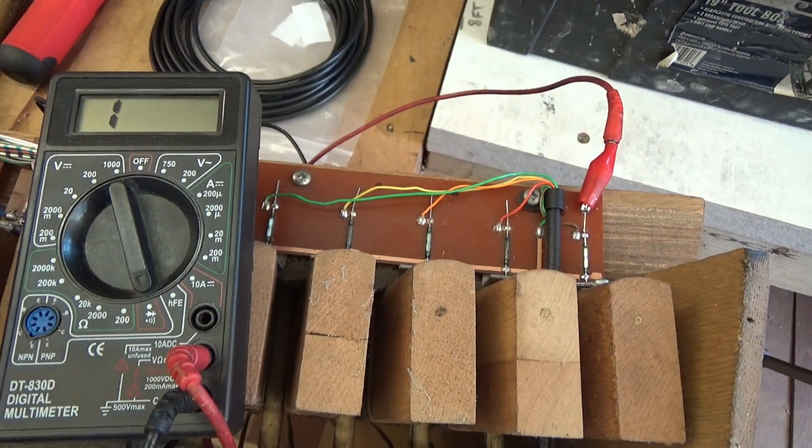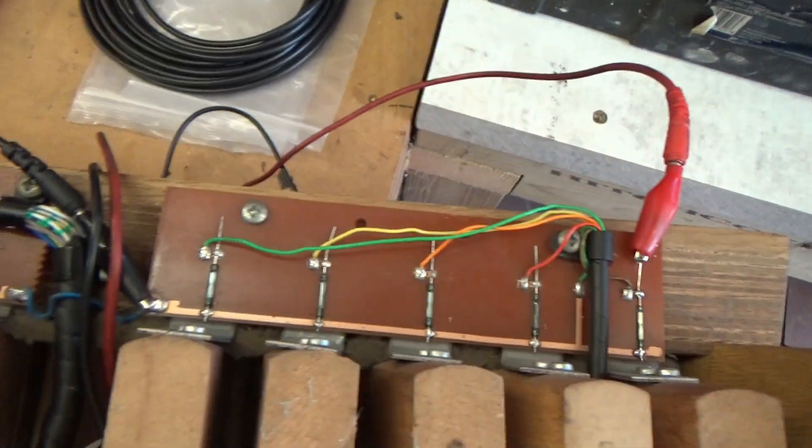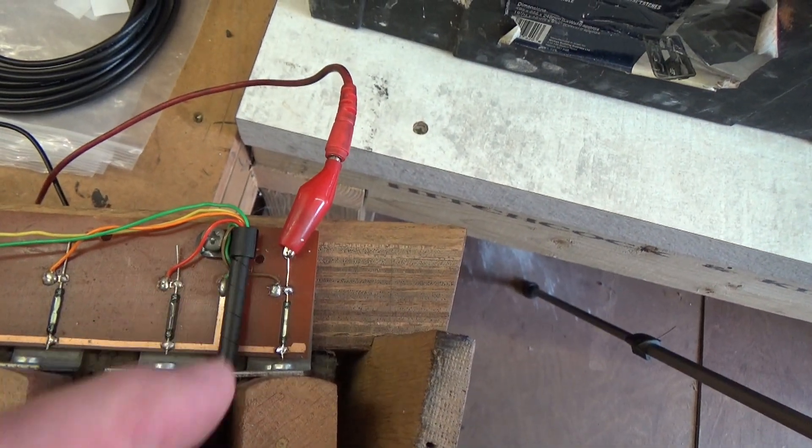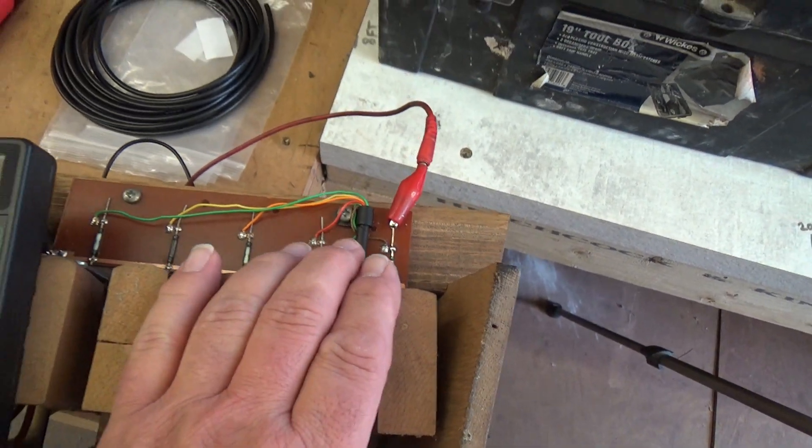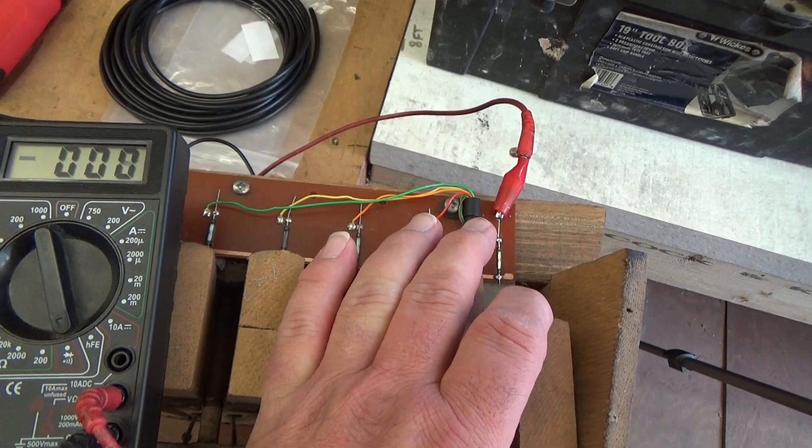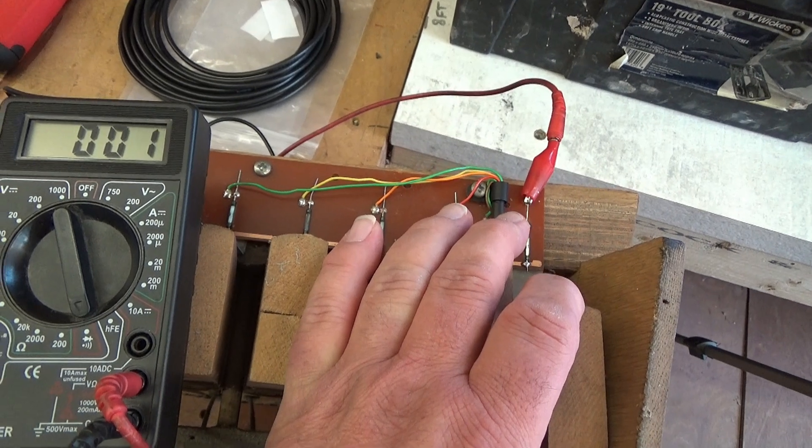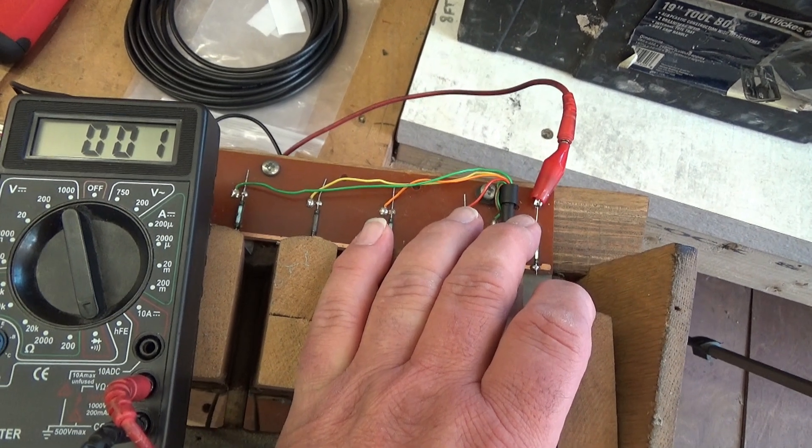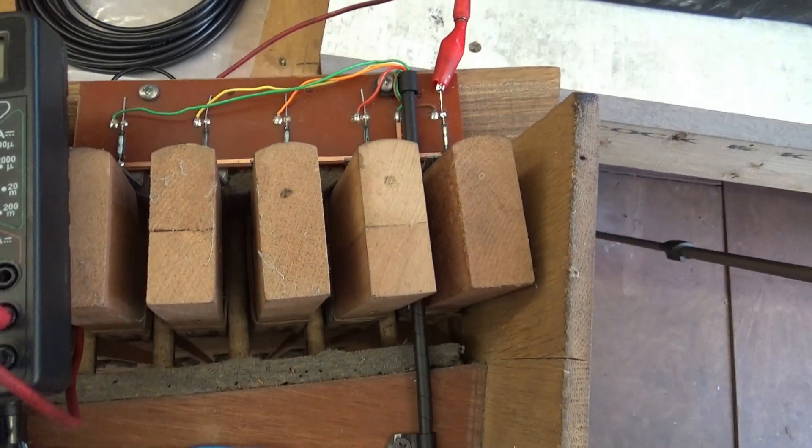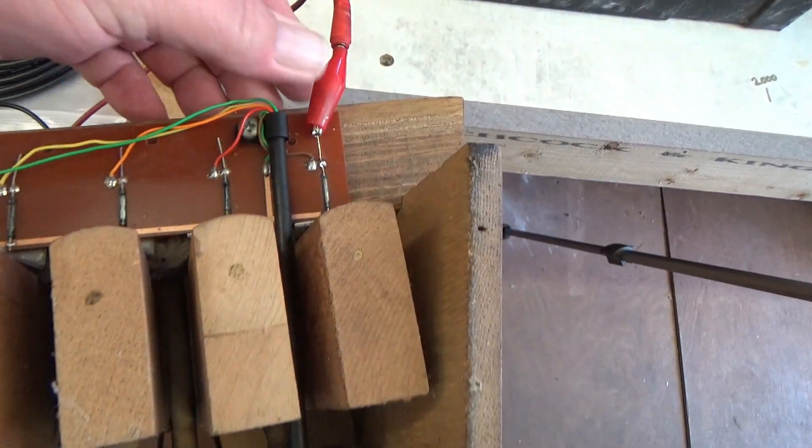So I've hooked up my test meter between the common line, as you can see at the bottom, and the opposite side of one of the reed switches. And as expected, if I press that down, the meter changes to show that it's now connected. It's zero or one ohm resistance and the meter beeps. And that's what should happen with all of the reed switches.